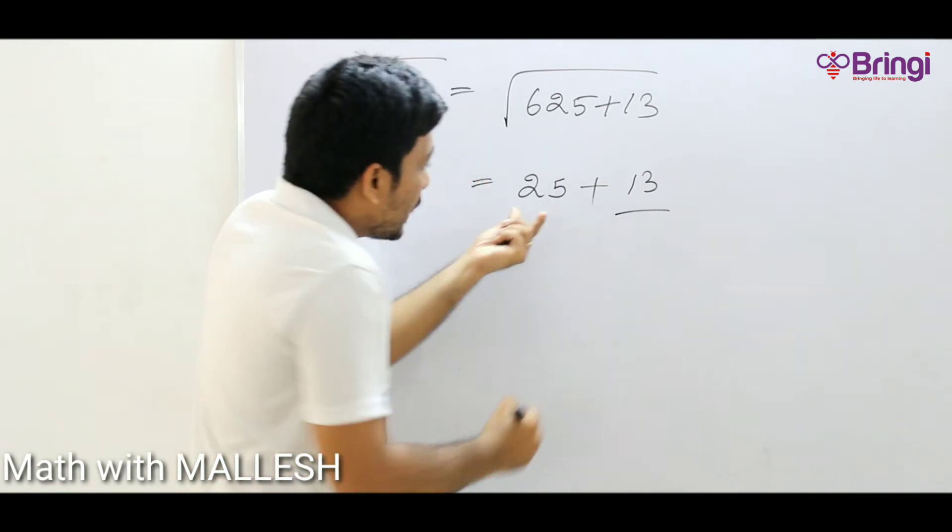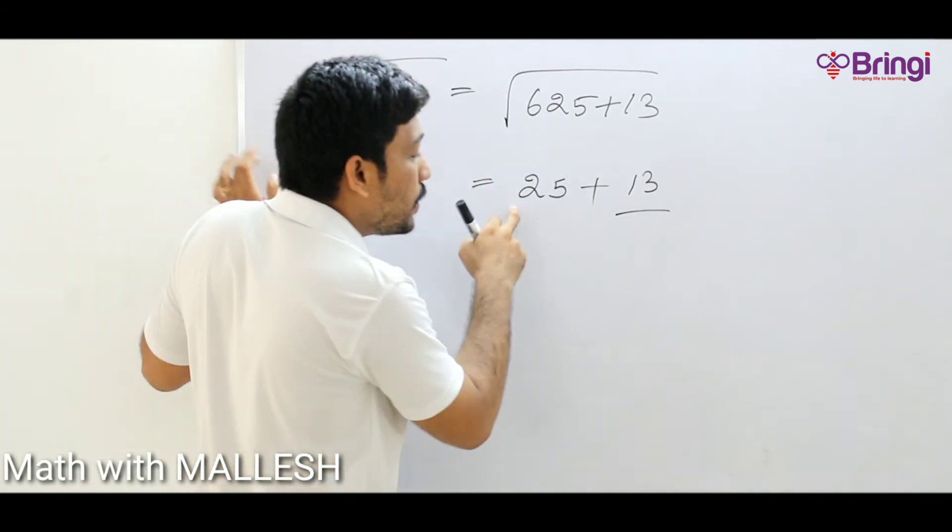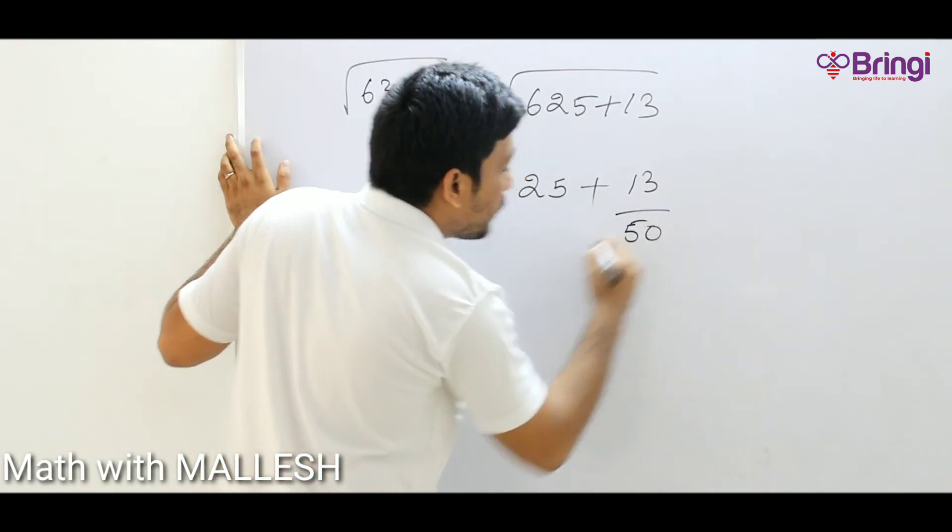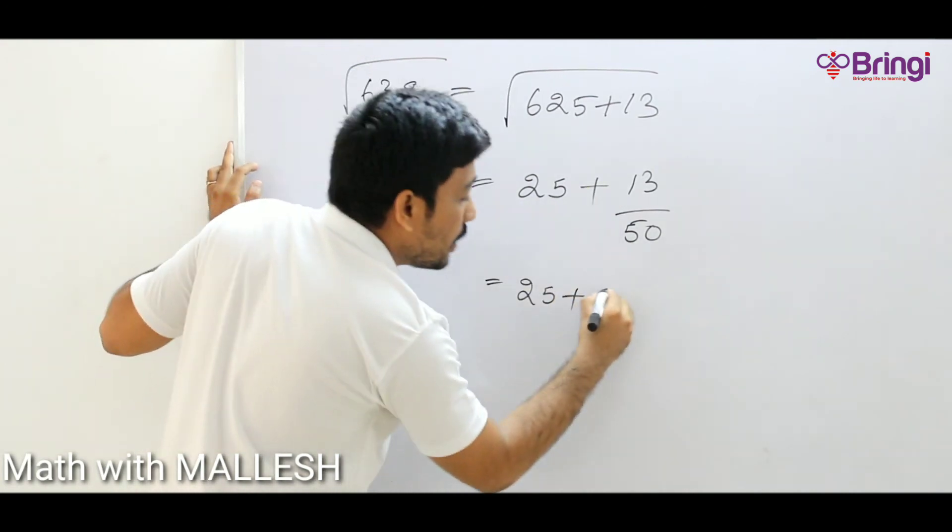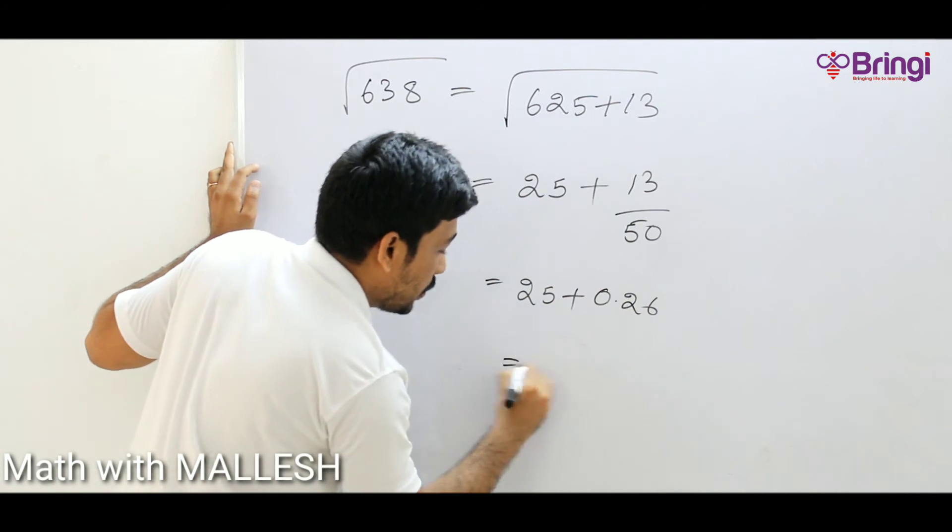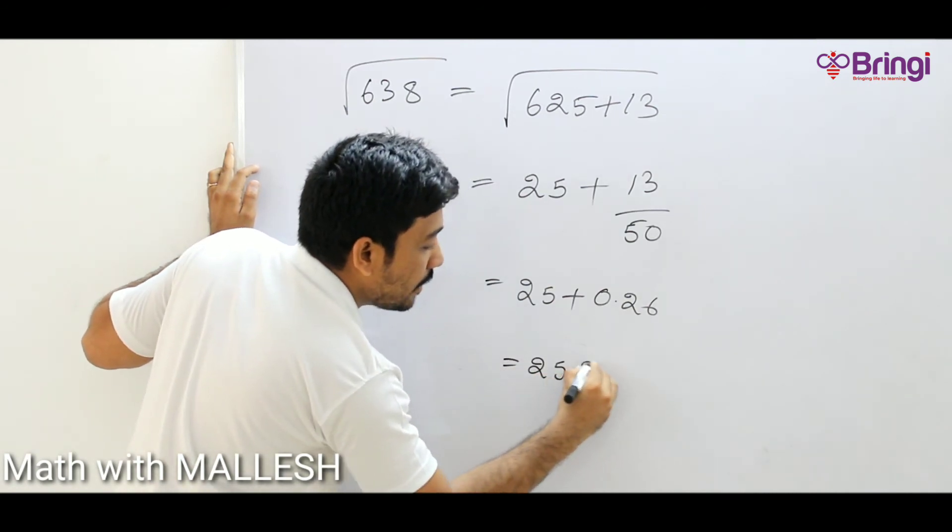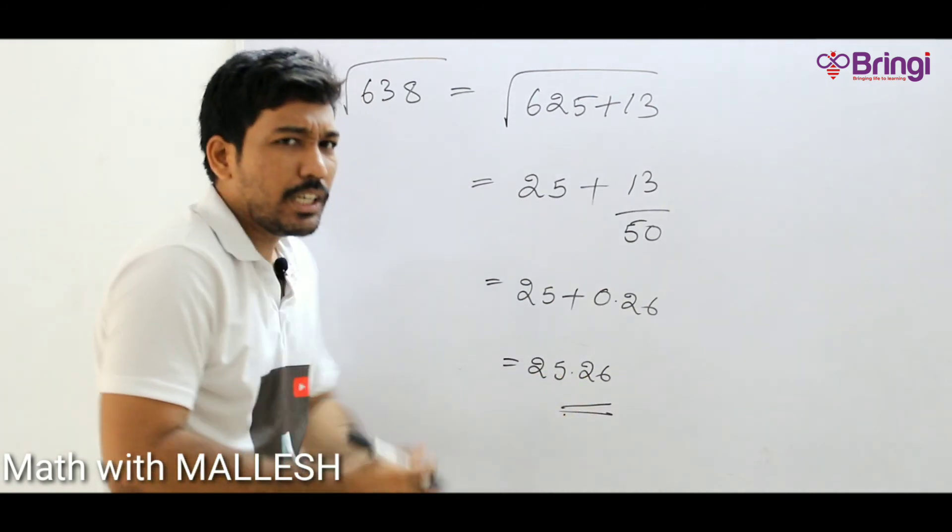And plus, if you write as a plus minus, if you write as a minus, by take 25 and double it. If you double it you will get 50. So 25 plus 13 by 50.